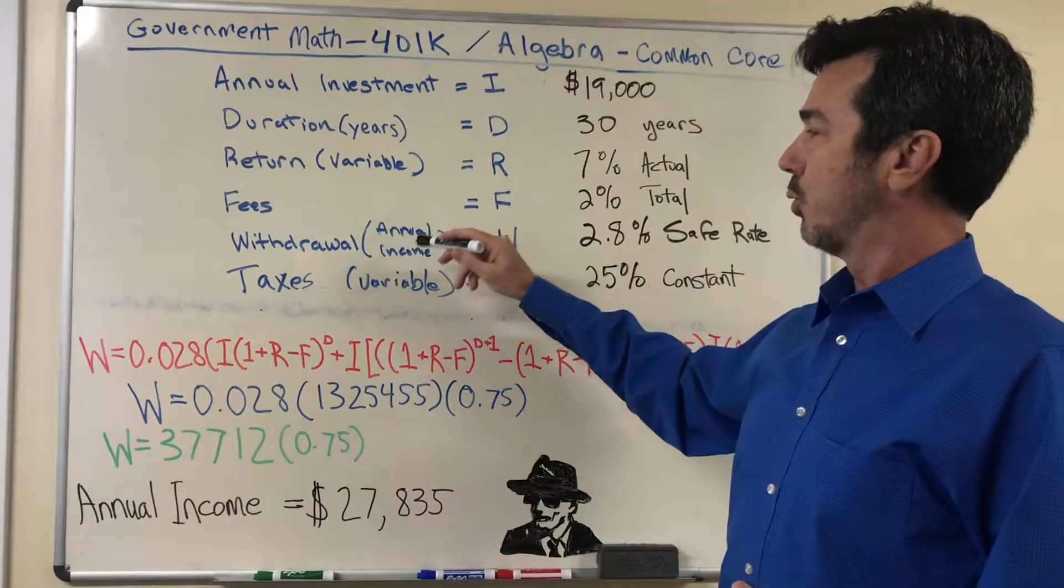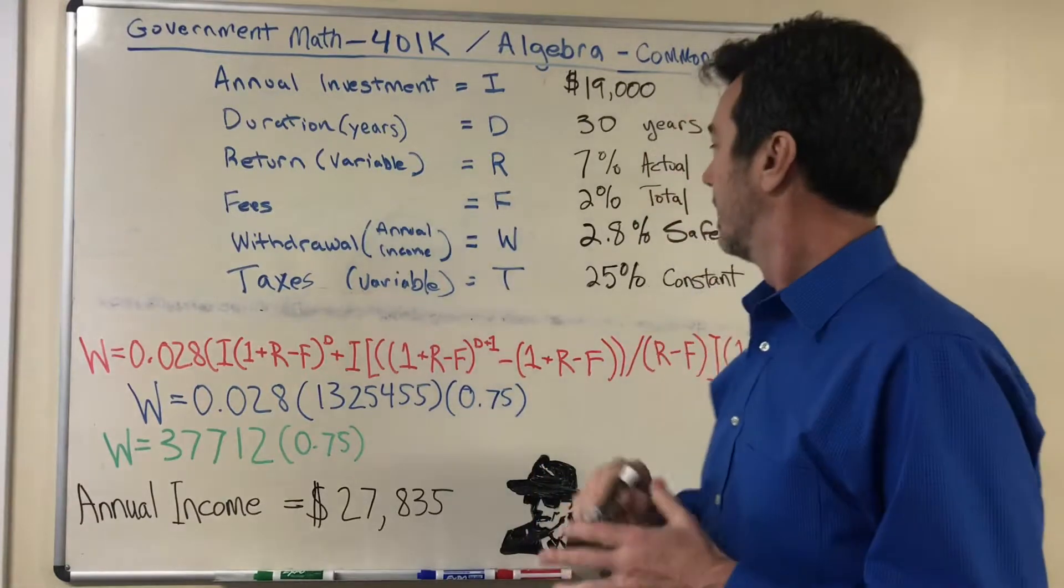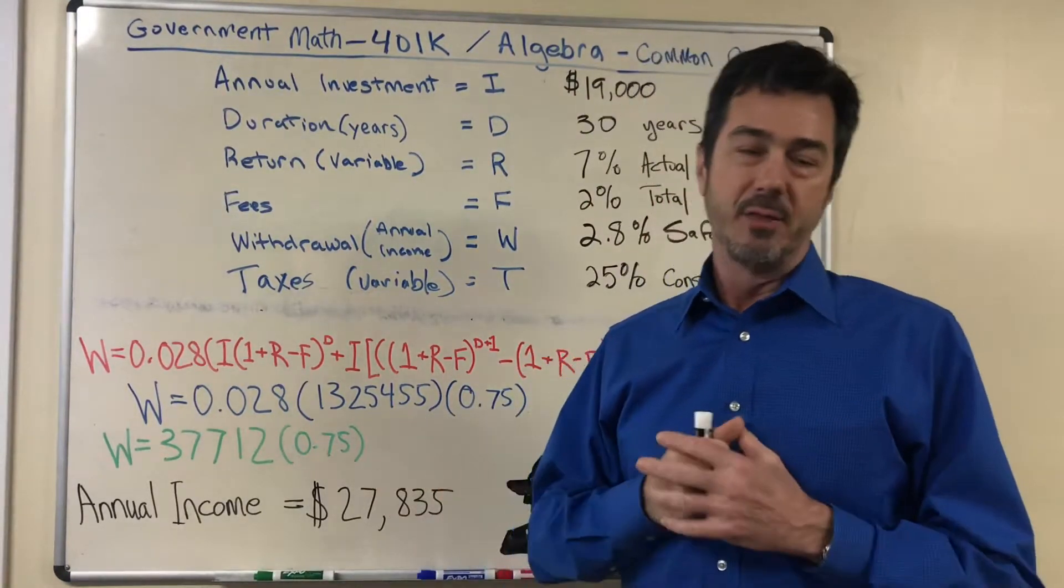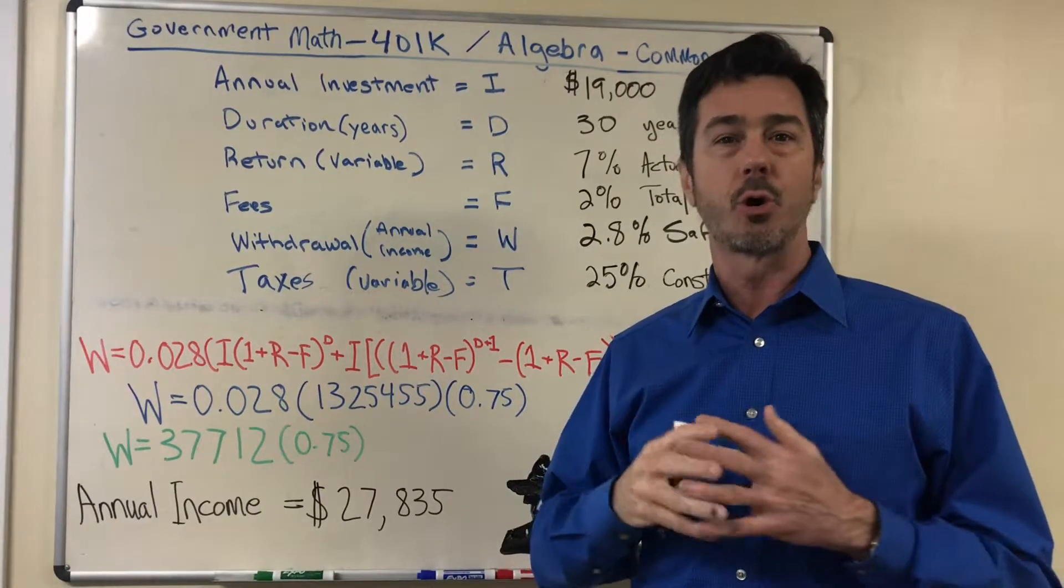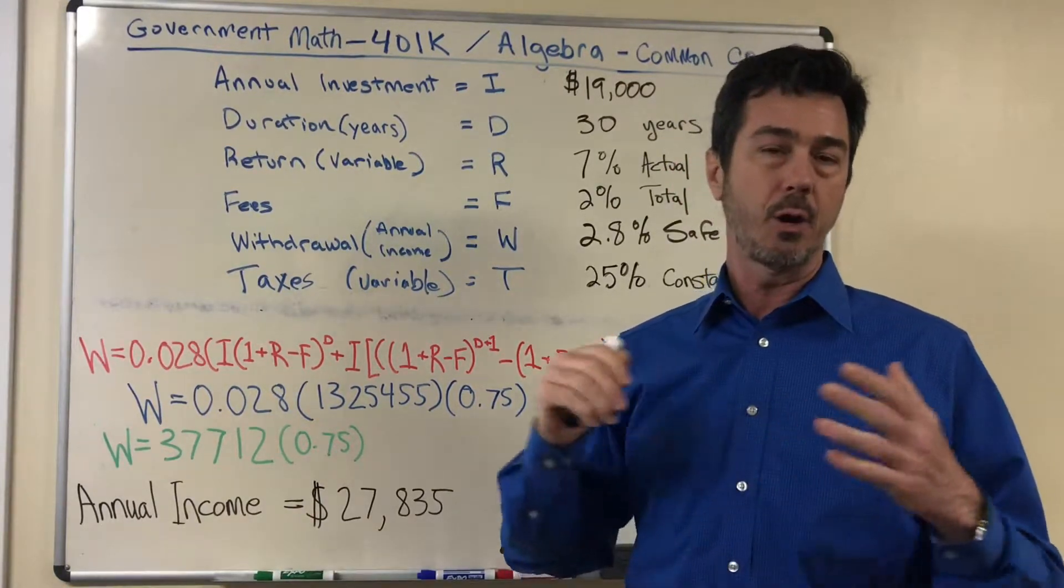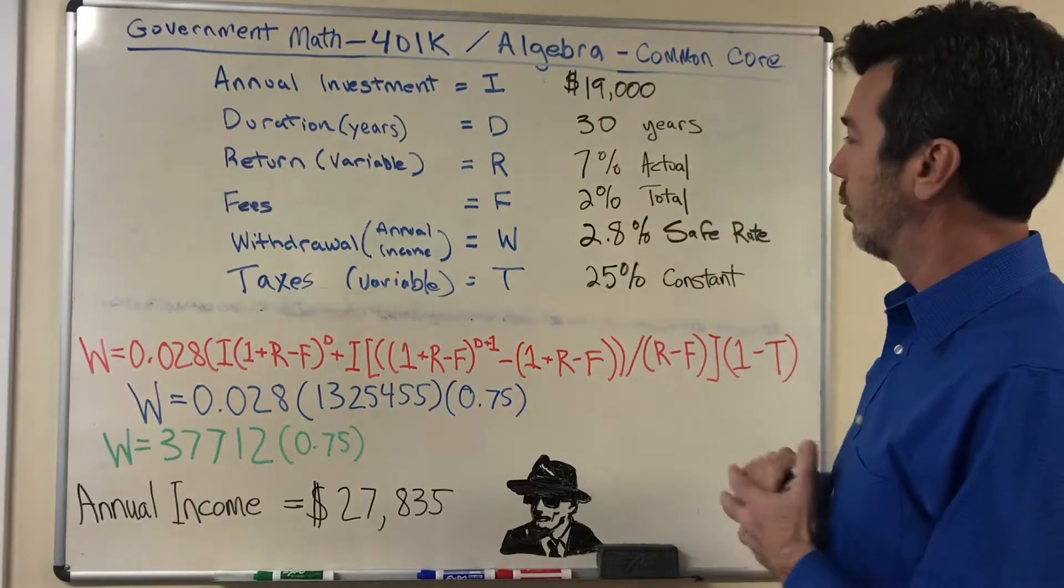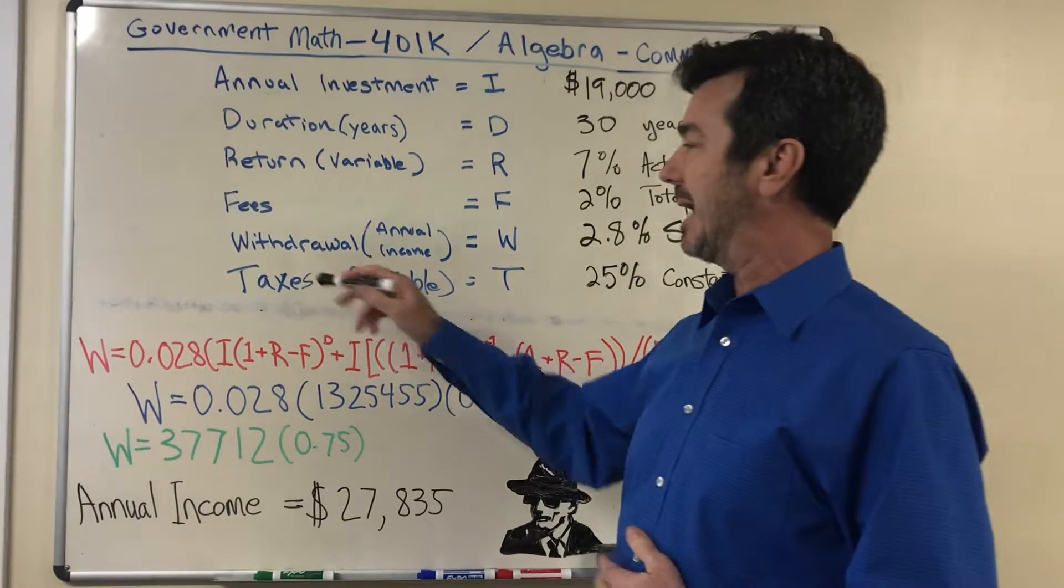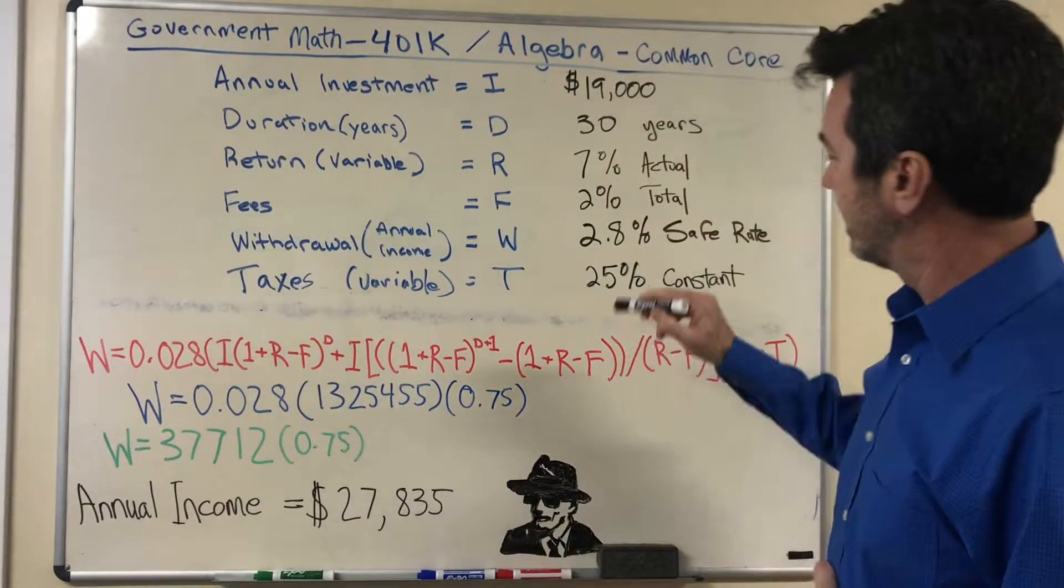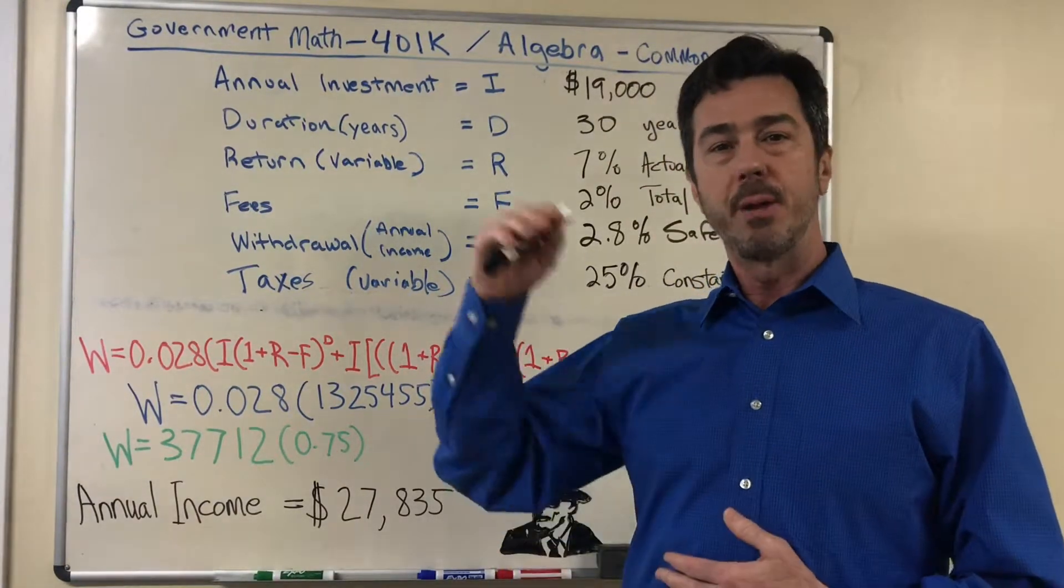The withdrawal will be the actual annual income that you can take from your 401k at retirement. So that will be W and the safe withdrawal rate is 2.8 percent. This is a number from a study done by Morningstar and many financial experts where they came up with a safe withdrawal rate that you could take from your 401k or other plan without running out of money. And of course there's taxes. Taxes are due upon withdrawal from any qualified plan. In this case we're going to use 25 percent, a constant rate that will be calculated upon withdrawal.